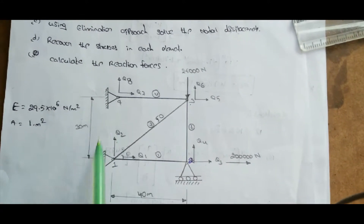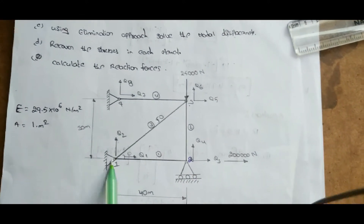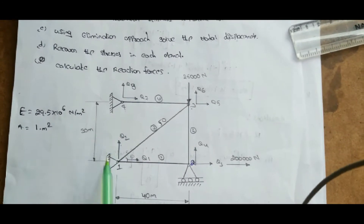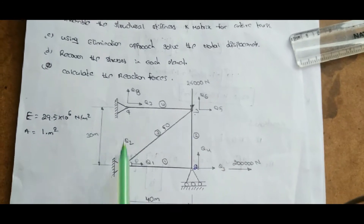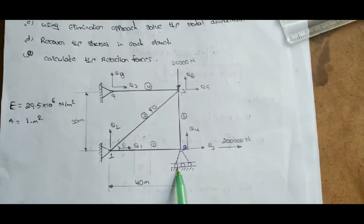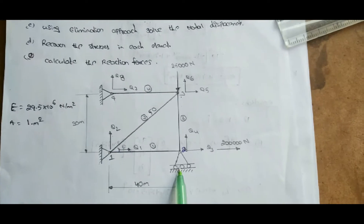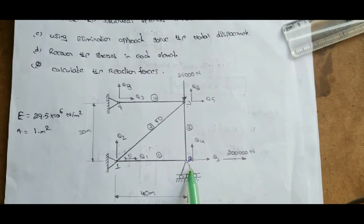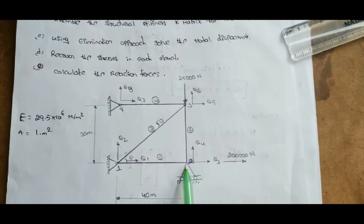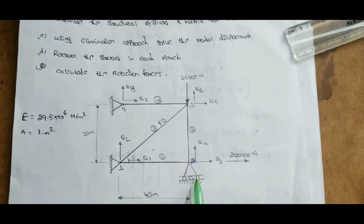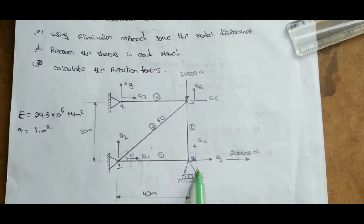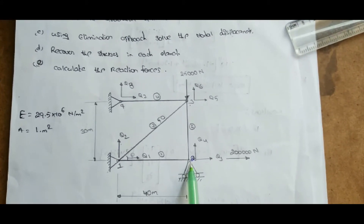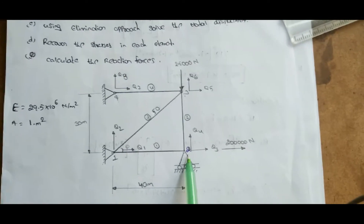Q5 and Q6 are the displacements at node 3. Q7 and Q8 are the horizontal and vertical displacements at node 4 respectively. There are supports at node 1, node 4, and node 3. These are fixed supports — there is no movement in horizontal or vertical direction. At node 2, there is a roller support, so there is no vertical displacement but there is horizontal movement.